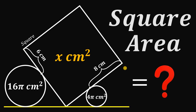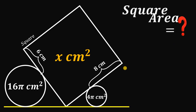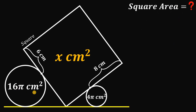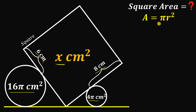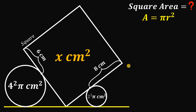Now let's see if you got the correct answer. Given the area of the big circle is 16π cm² and the area of the small circle is 4π cm², with measurements of 8 and 6 centimeters, the goal is to find the area of the square. Using the formula π r², the area 16π can be rewritten as π·4², so the radius of the big circle is 4 centimeters. Similarly, 4π equals π·2², so the radius of the small circle is 2 centimeters.